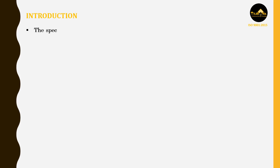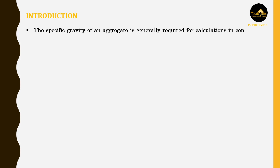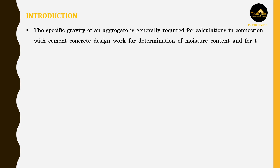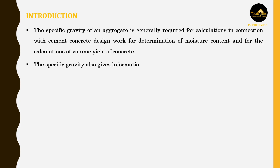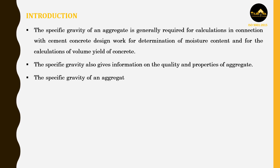Introduction: The specific gravity of an aggregate is generally required for calculations in connection with cement concrete design work, for determination of moisture content, and for the calculations of volume yield of concrete. The specific gravity also gives information on the quality and properties of aggregate. It is considered to be a measure of strength and quality of the material.